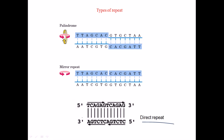Starting from the 5 prime to 3 prime direction, this is an anti-parallel orientation — 5 prime to 3 prime, and inversely 3 prime to 5 prime in the other direction. Now we have TCAGAG, and after this part we can see the sequence repeating again: TCAGAG, then again TCAGAG. So one-two-three, then again one-two-three — that is called the direct repeat.